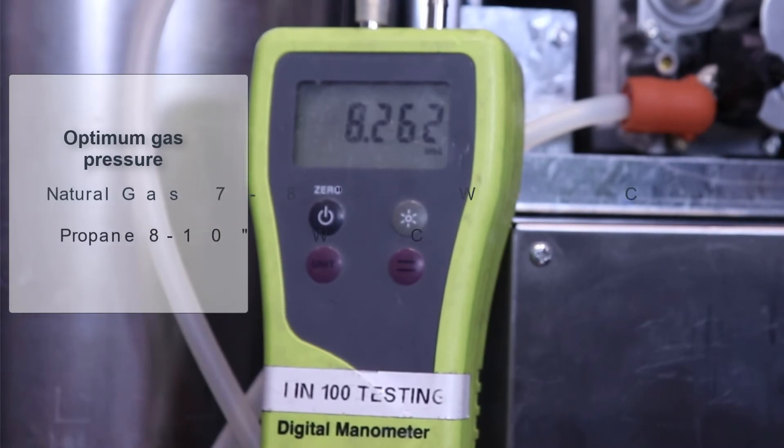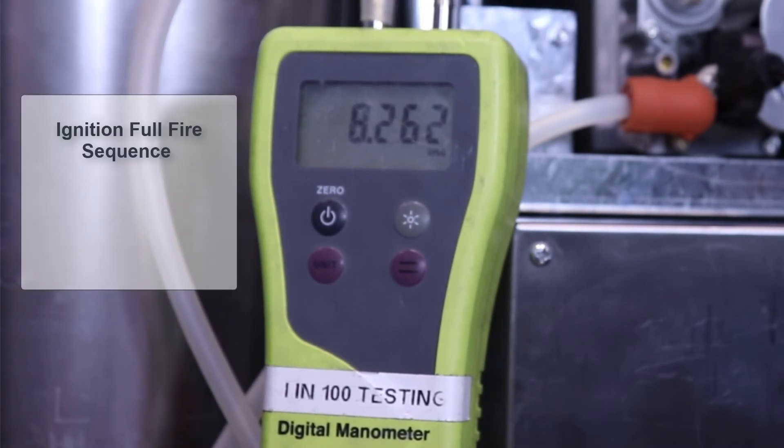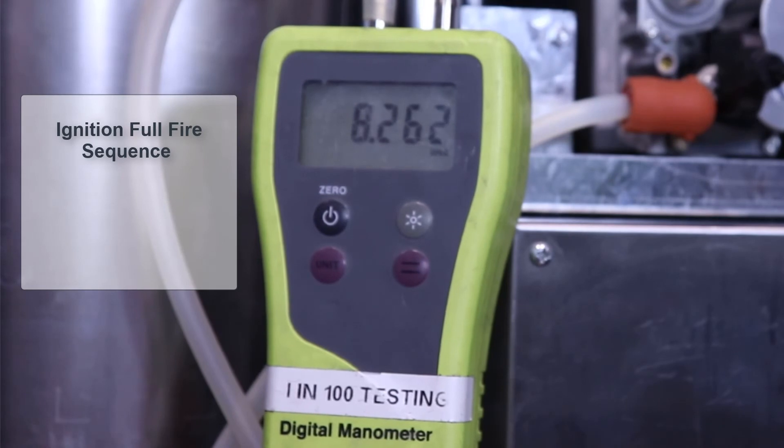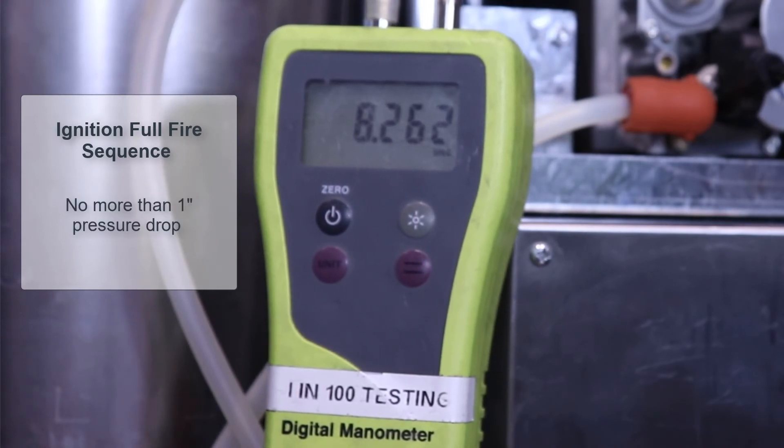During the ignition and full fire sequences of the boiler, we'd like to see no more than one inch pressure drop during these operational phases of the boiler.